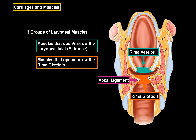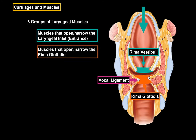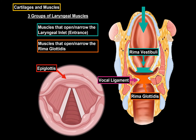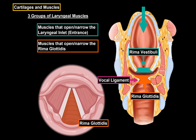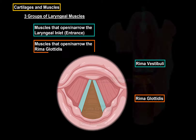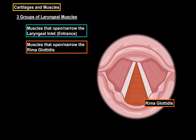If you look at the larynx from this direction, you'll see the epiglottis here and the aryepiglottic fold here. The vocal ligament is located right about here. Always remember that this pointy end is the anterior side, and this rounded one is the posterior side. The rima glottidis is between the vocal cords. Rima vestibuli is between the vestibular folds. The muscles that open and narrow the rima glottidis work to open or narrow it.